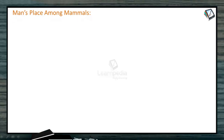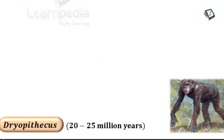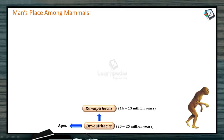Now let's start from the very beginning. Dryapithecus — I told you about the prosimians, the protoprimates. Dryapithecus lived 20 to 25 million years ago and is considered the ancestor of the modern man. From Dryapithecus came the apes, and then one group evolved to form Ramapithecus.